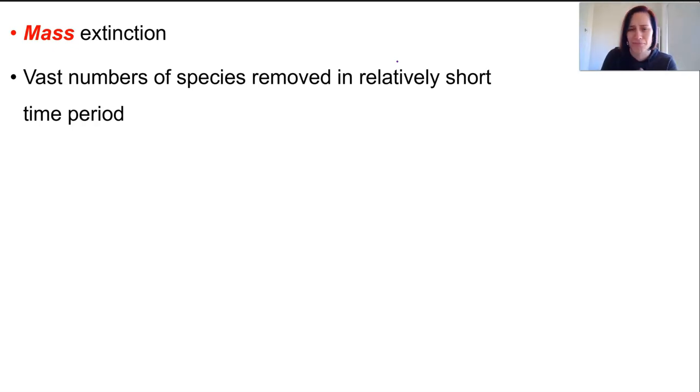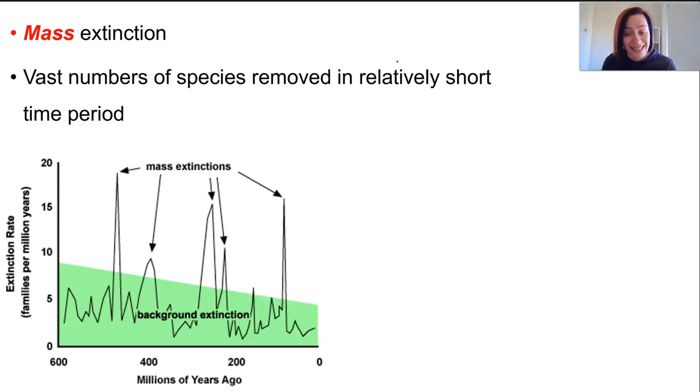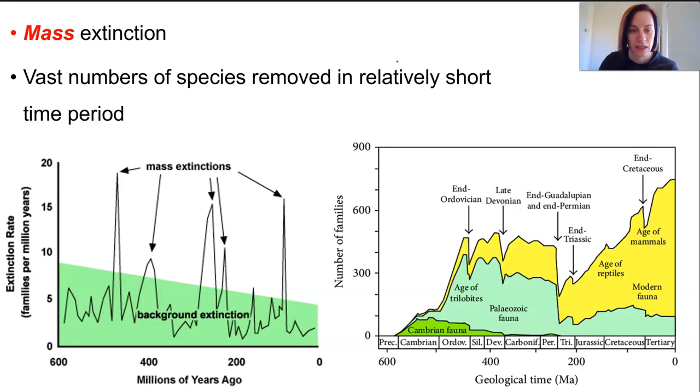A mass extinction is an episode where a vast number of species are wiped out in a relatively short time period. Keep in mind a time period might be millions of years. An example of this is the Cretaceous extinction, around 65 million years ago, that wiped out the dinosaurs. Although their close relatives, the birds did survive. It is generally accepted that this mass extinction was most likely caused by an asteroid hitting Earth and drastically changing environmental conditions.